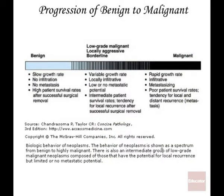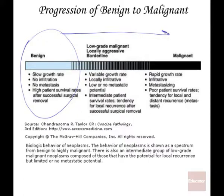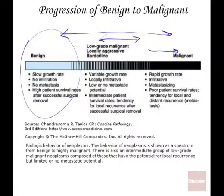This progression from benign to malignant can occur, though some tumors stay benign and never progress. One area of active cancer research is predicting which tumors will stay benign versus become malignant — in some cases, we really can't yet do that. In the malignant state, there is rapid growth rate, infiltration to other tissues, metastasis where cancer cells migrate to other tissues, and then poor survival.